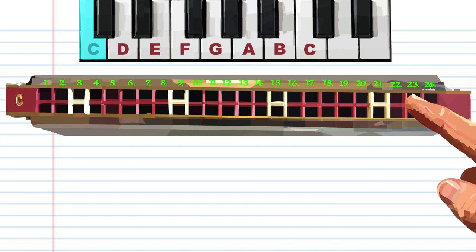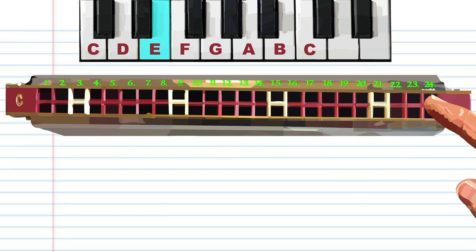Blowing into 21 is of course C again. Breathing in through 22 is A. And blowing into 23 is E. And finally, breathing in through 24 is B.